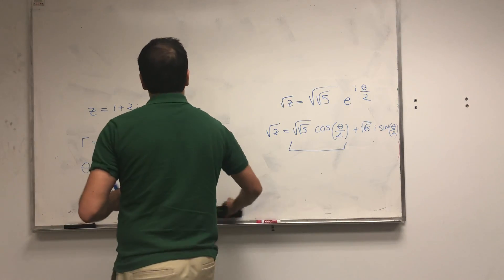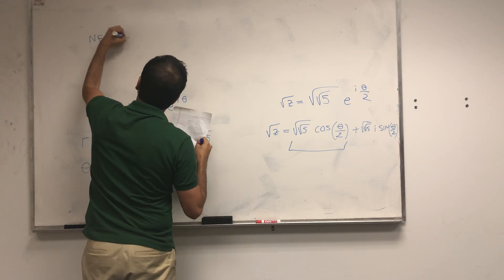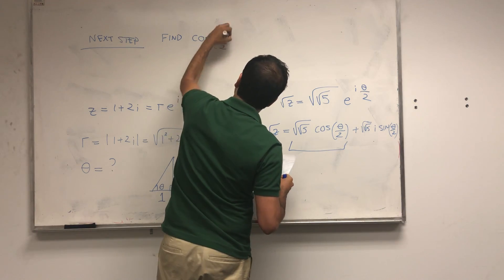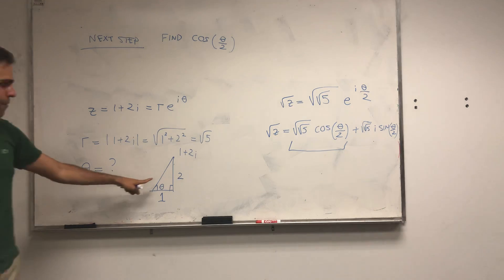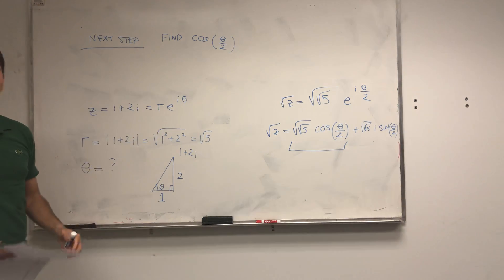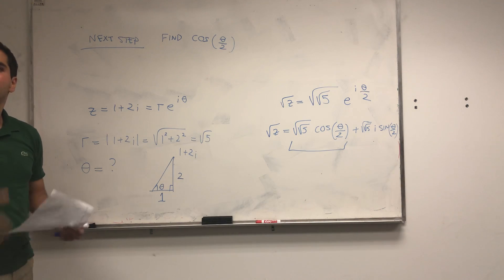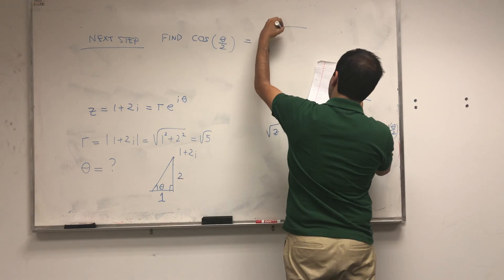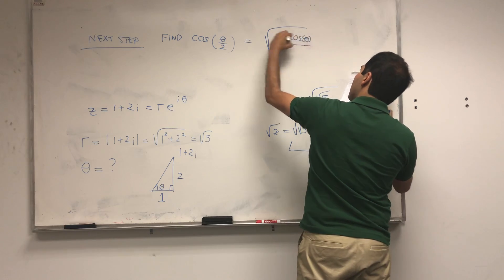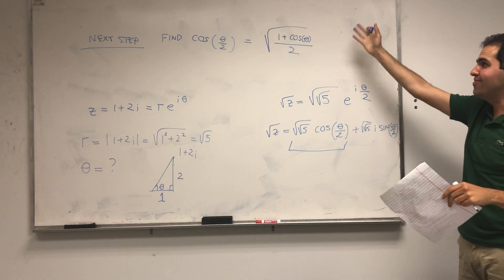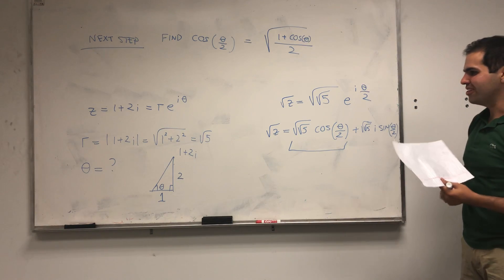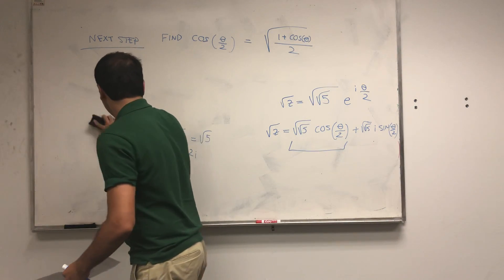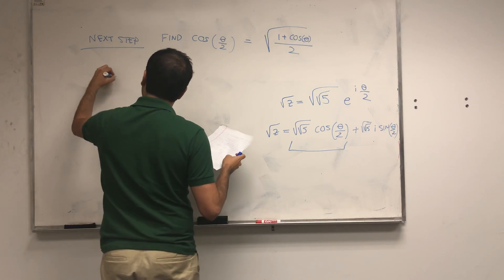So the next step is to find cosine(θ/2). This is an interesting question — from the triangle we can find cosine of θ, but we want cosine of θ/2. For this we have to use the half-angle formula: cosine(θ/2) equals square root of (1 plus cosine θ) over 2. It's a beautiful problem — it combines all levels of math.